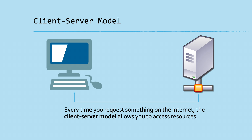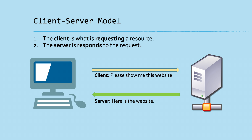Now let's talk about the client-server model. Every time you request something on the internet, the client-server model allows us to access resources. We have a client, which is our computer, requesting a website, and the server gives us the website — it's a request and a response. The client is the machine or computer requesting the resource, and the server is what is serving the resource.